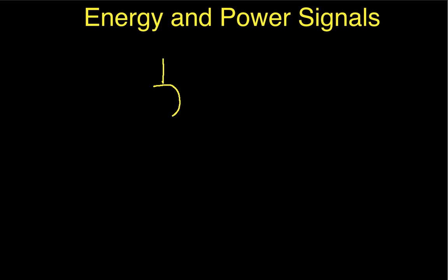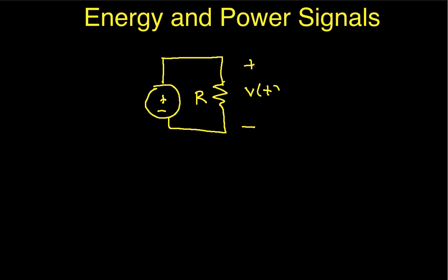The purpose of this video is to describe the difference between energy and power signals. We'll begin by looking at a simple electrical circuit. I have a resistor with resistance R, a voltage across the resistor that I'll call V of T, because it could conceivably be changing, and a current that goes through the resistor, which I'll call I of T.